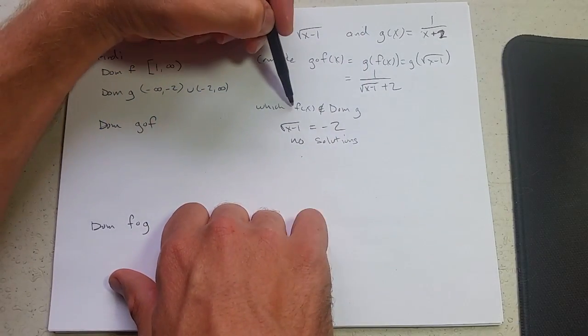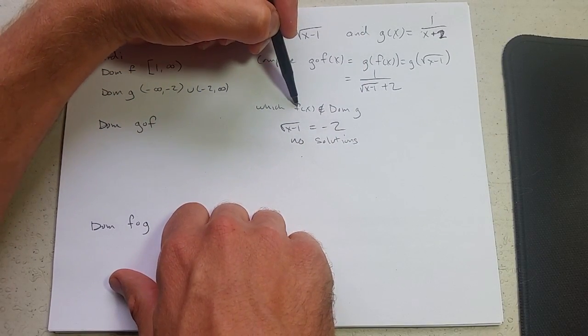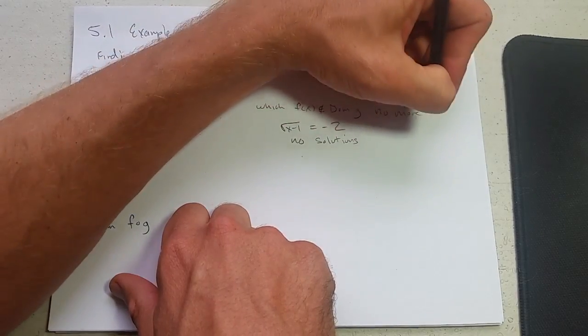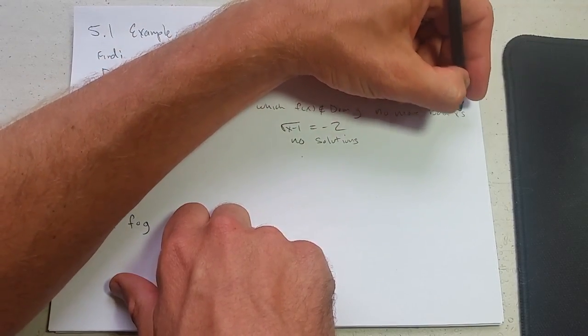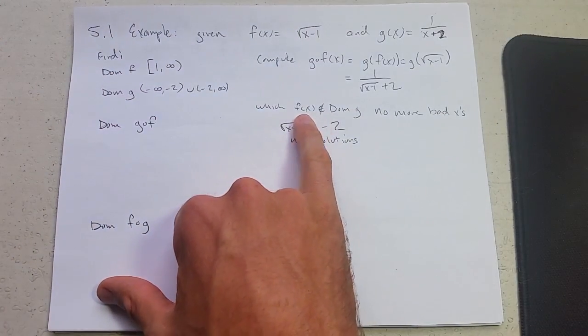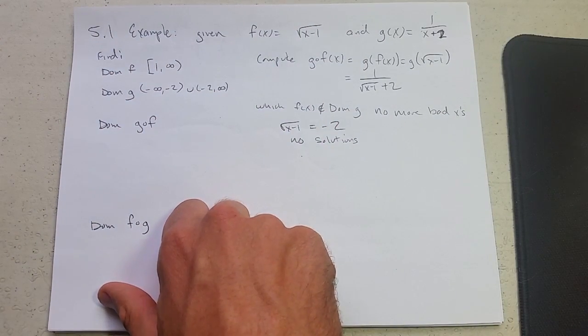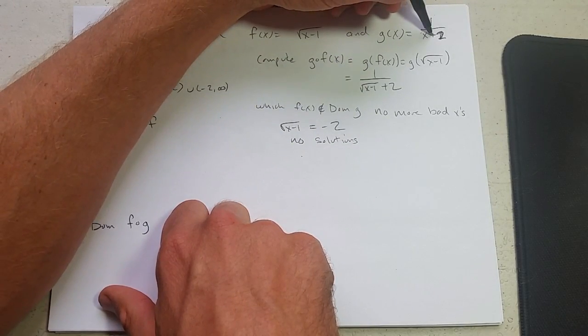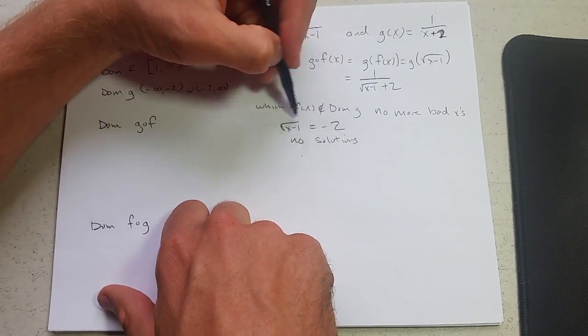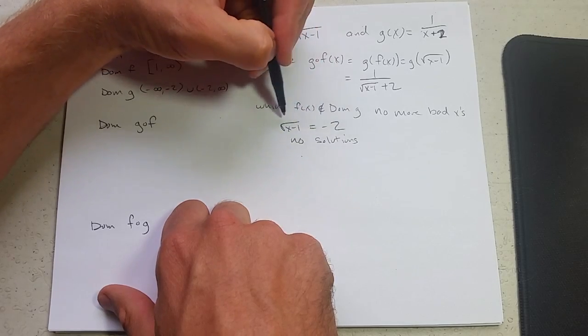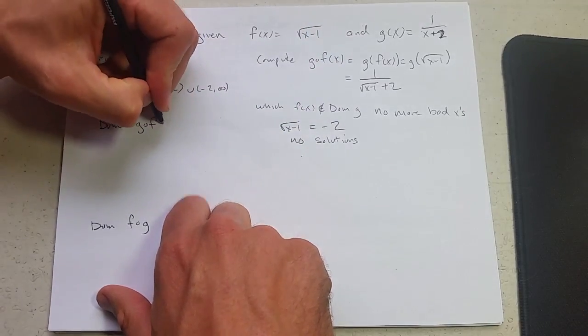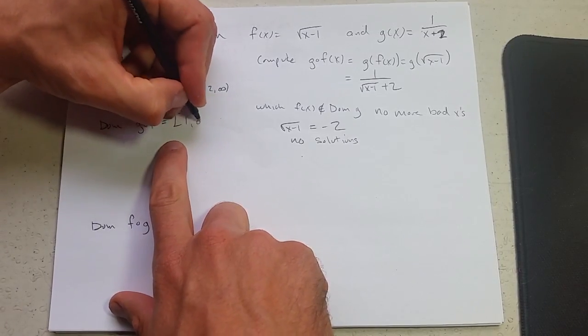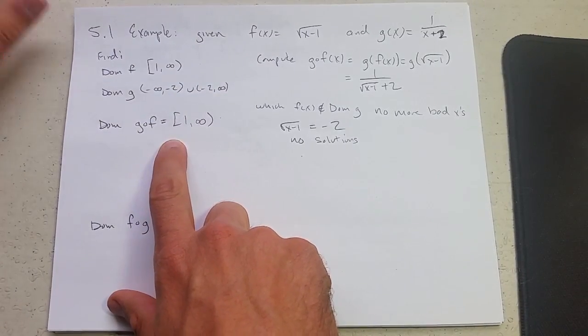What that means is there are no f of x's not in the domain of g. So there are no more bad x's. There's no way to get f of x into the domain of g. It would be different if this is a minus 2 here, then I would have a bad value down here. So domain turns out is just domain of f.